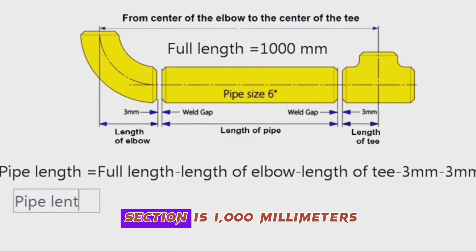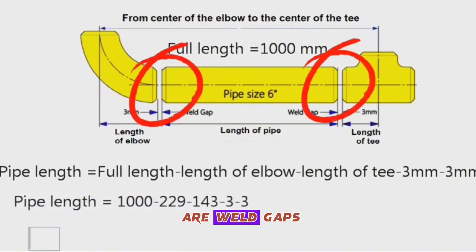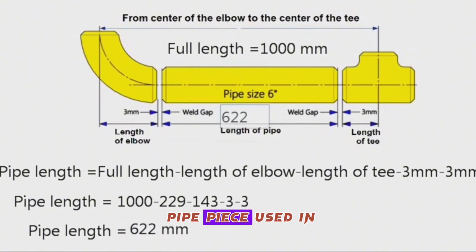If the full pipe section is 1000 millimeters, then the pipe length is equal: 1000 minus 229, minus 143, minus 3, minus 3. In here 3 millimeters are weld gaps which are used in the fit-up stages. Here we calculate and find that the length of the piece of pipe is 622 millimeters. In other words, the length of the pipe piece used in this pipeline is 622 millimeters.